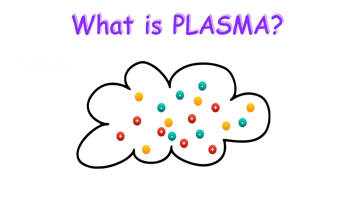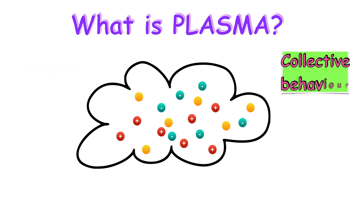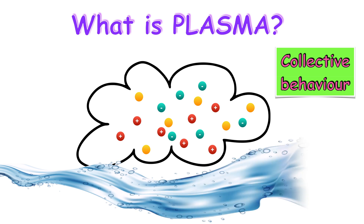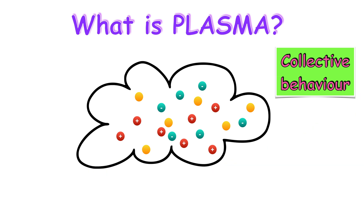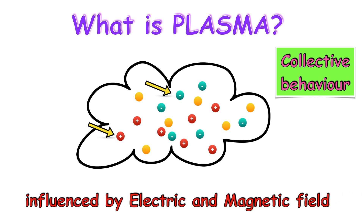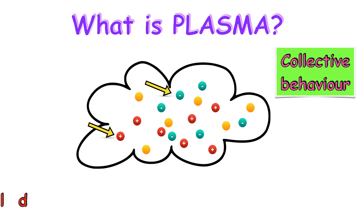Also, plasma has a collective behavior, meaning plasma acts as a whole. For example, plasma can flow like a liquid. Because plasma is made up of electrically charged particles, such as electrons and protons, it is strongly influenced by electric and magnetic fields.